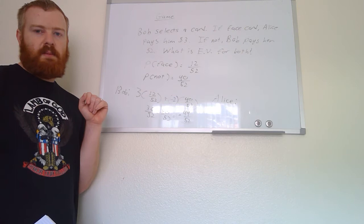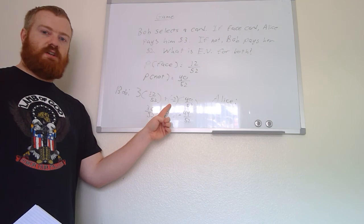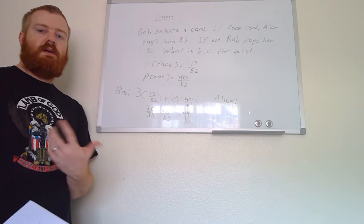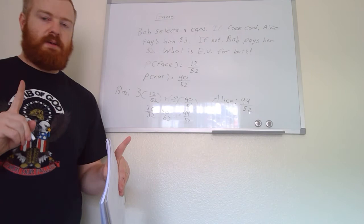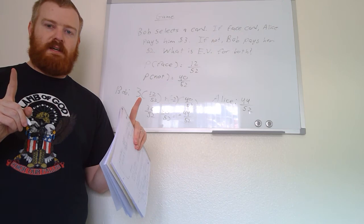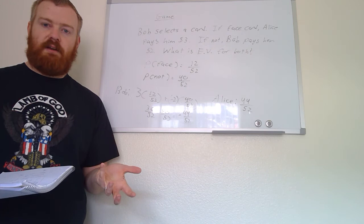For Alice, the probabilities and payouts are the same but the perspective is flipped. If Bob wins she pays $3, making that negative for her, and if Bob loses she wins $2, making that positive. So her expected value is positive 44/52 — the opposite sign of Bob's. When you have two players in a money game like this, the expected value of one will be the negative of the expected value of the other. If you have any questions, especially on the Bayes theorem section, please feel free to reach out. There are also attached exercise videos on Canvas.